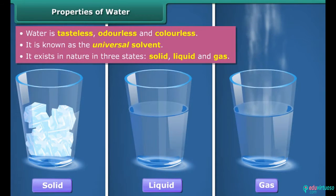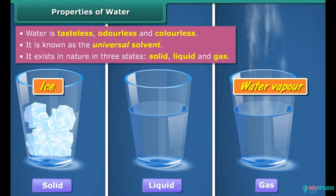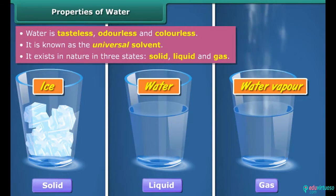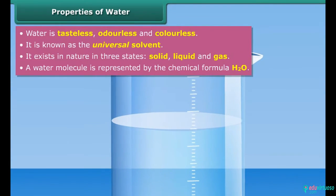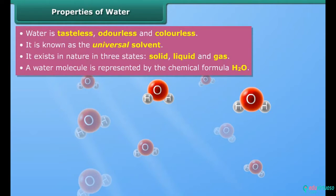Water exists in nature in three states: solid, liquid and gas. In solid form, water is known as ice or snow. In gaseous form, water is known as water vapor or steam. But the most common form that water takes is the liquid form. A water molecule is made up of two hydrogen atoms and one oxygen atom, which is why water is represented by the chemical formula H₂O.